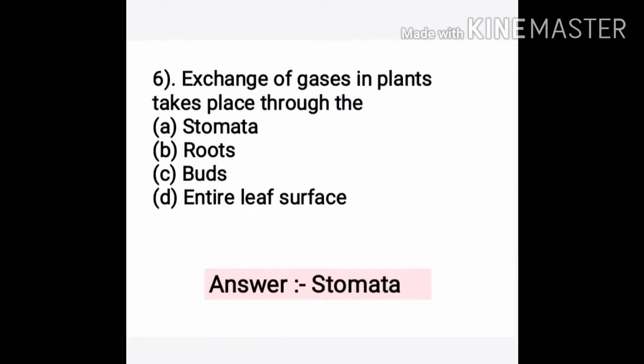Question six: Exchange of gases in plants takes place through which option? A. Stomata, B. Roots, C. Buds, D. Entire leaf surface. Your answer is A. Stomata — that is the place where maximum exchange of gases occurs in plants.